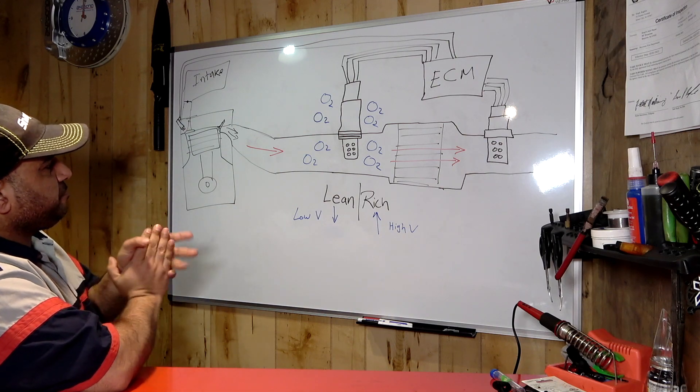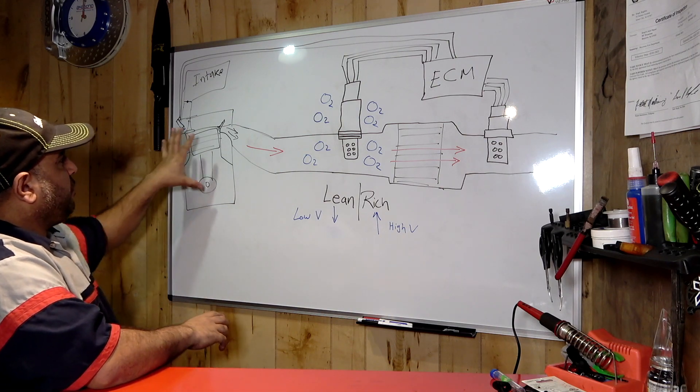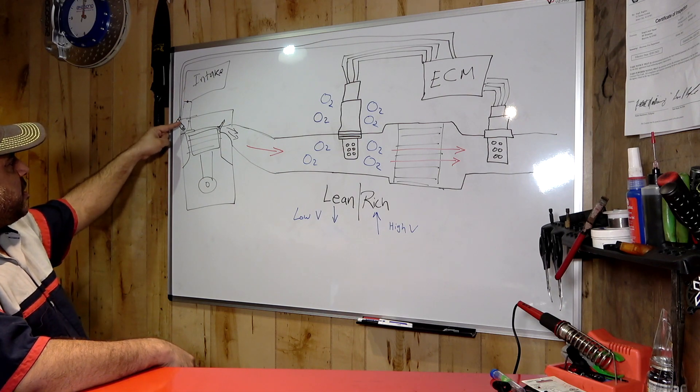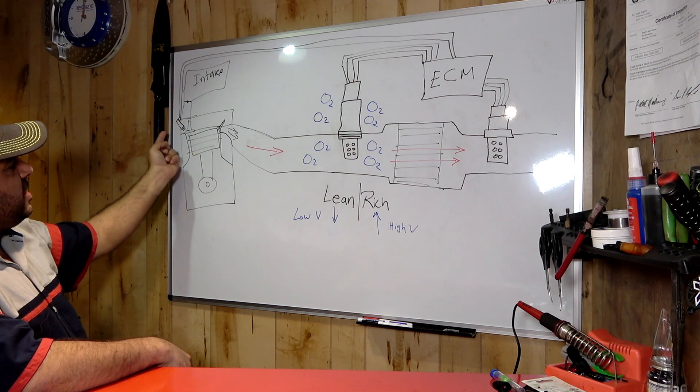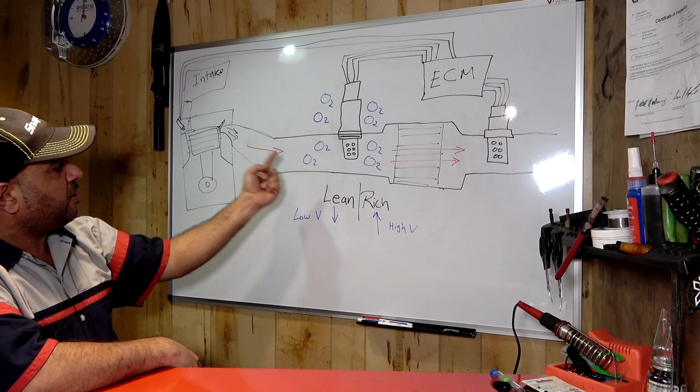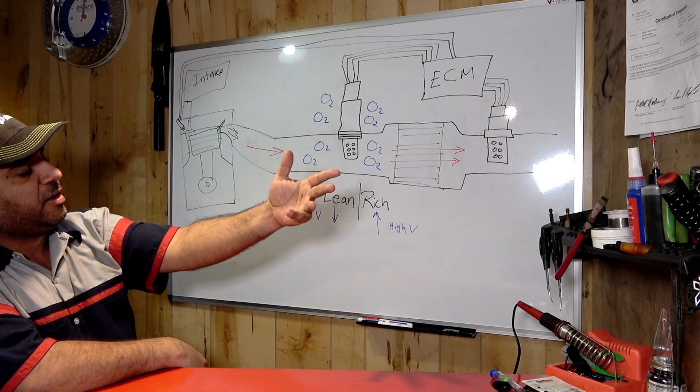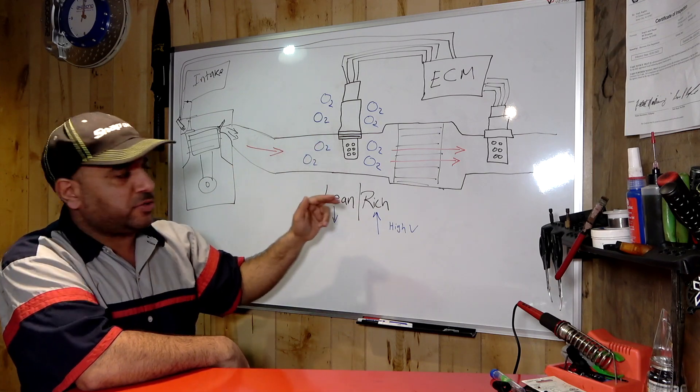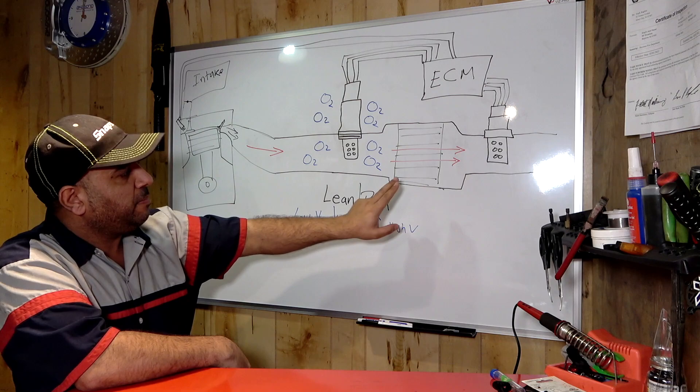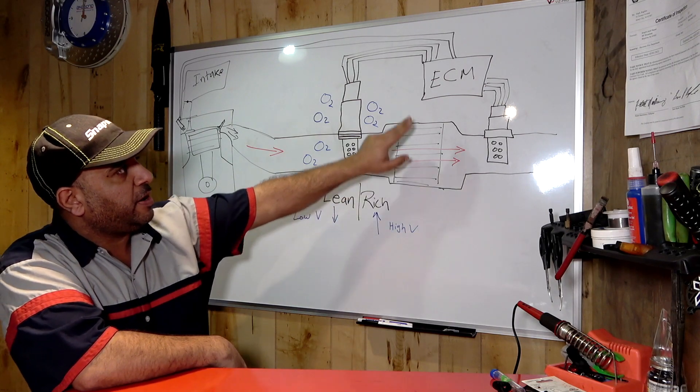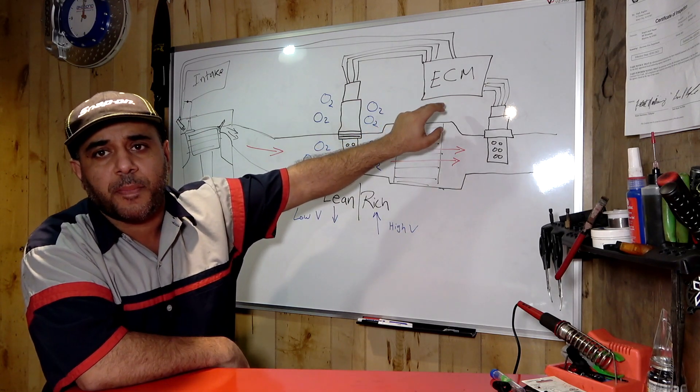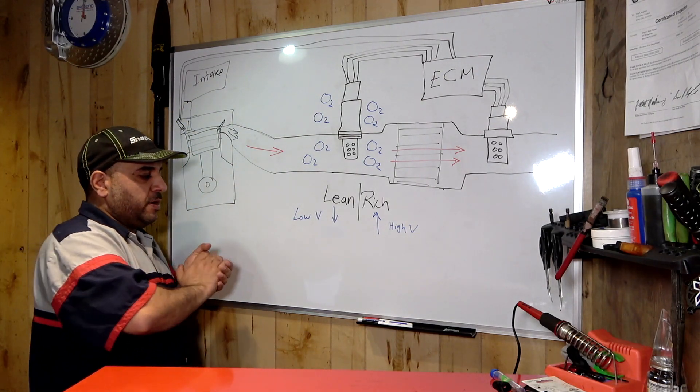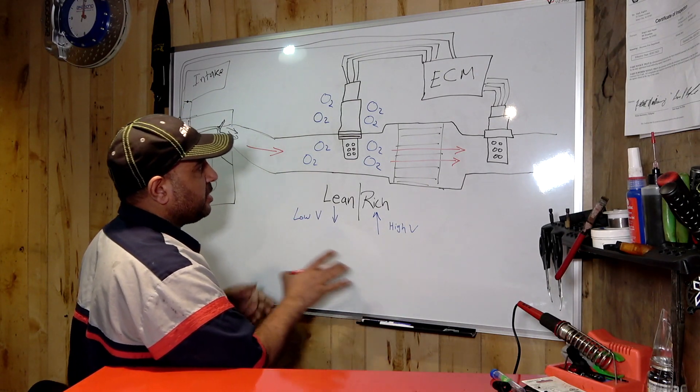We got an engine, we got an injector here, we got the intake. So the air comes in, the injector throws in gas, and it goes out the muffler, exhaust manifold, through the exhaust system. These sensors are inside your exhaust system. There's two of them here. In between you have the catalytic converter. ECM, engine control module, is like the brain.